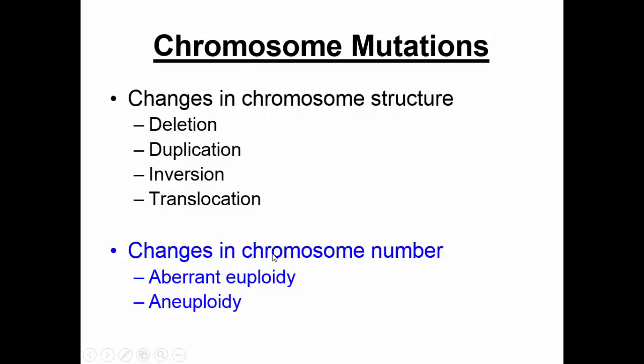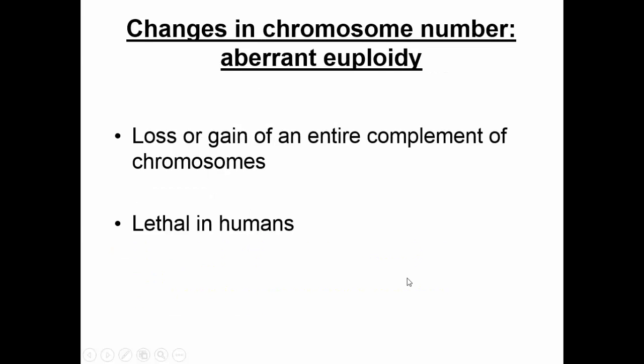Now let's talk about changes in chromosome number. The first type is something called aberrant euploidy, which is a gain or loss of an entire complement of chromosomes. Humans are diploid — we have 23 pairs, two of each type. Aberrant euploidy would be as if all of a sudden we had three or four of each type of chromosome. That's something humans cannot handle; it's lethal. Plants, however, are organisms that can handle that very easily sometimes, and it's an event that actually leads to speciation of many different plants.